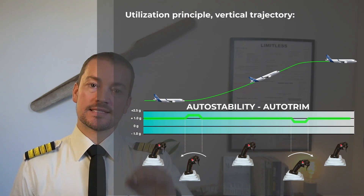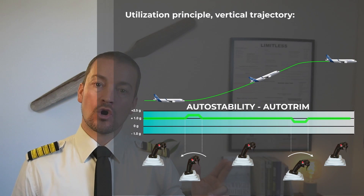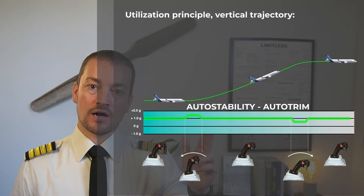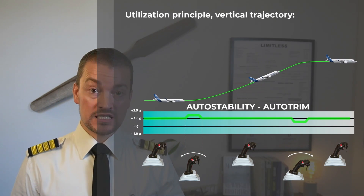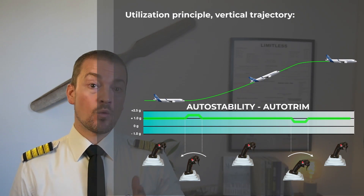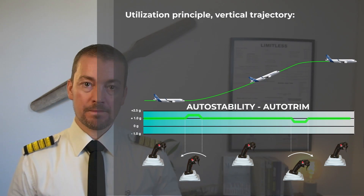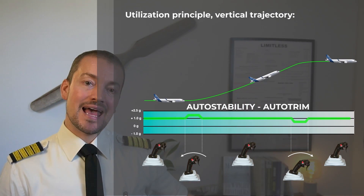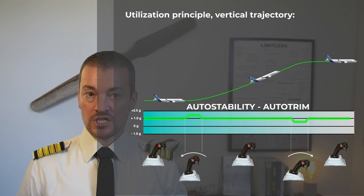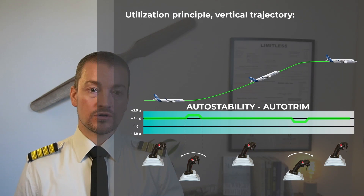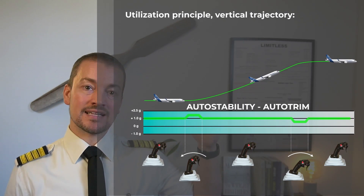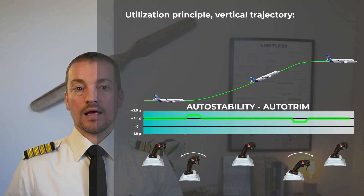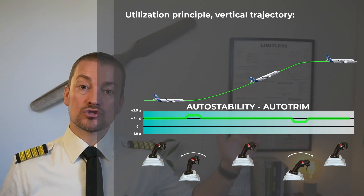Once I have the 10 degrees nose-up attitude I want, I let go of the side stick back to neutral. The aircraft will now return to a 1g neutral environment. The aircraft is now climbing at 1g, and the elevator remains deflected as needed to maintain that attitude.